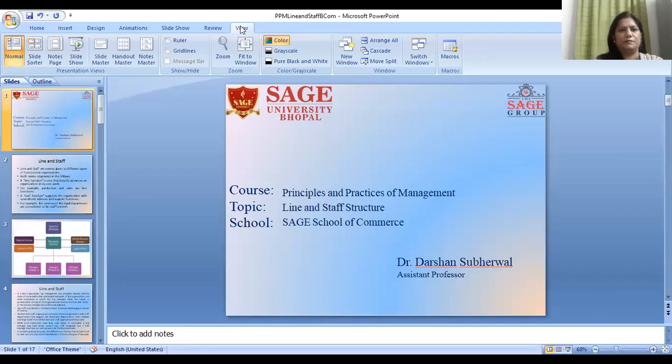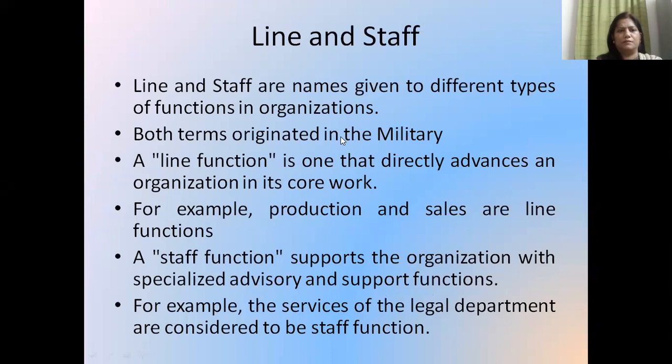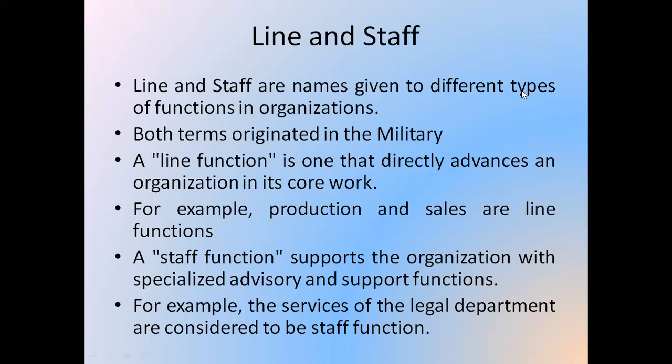Hello students, today we shall learn something about line and staff structure in an organization. So what is line and staff? Line and staff are names given to different types of functions in an organization. Both these terms originated in military organizations. A line function is one that directly advances an organization in its core work — that means whatever is the direct function of an organization.